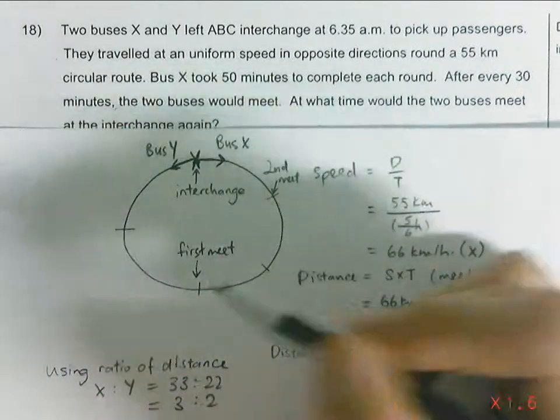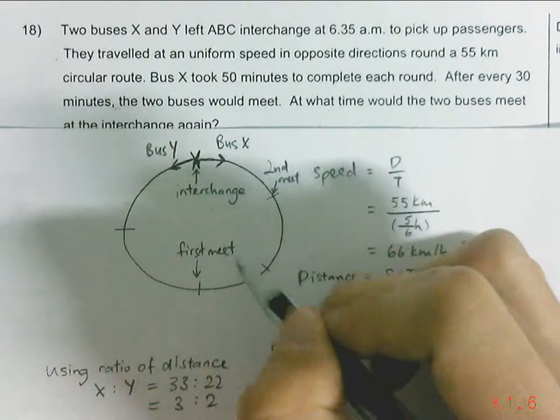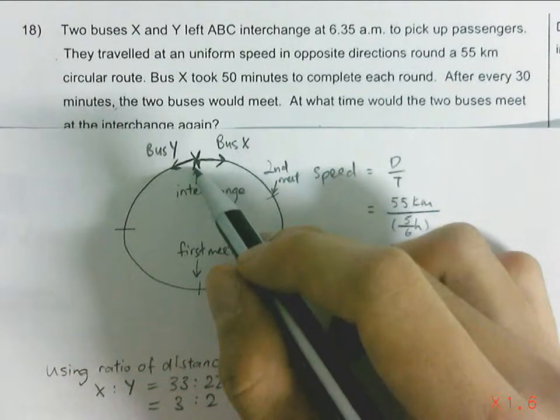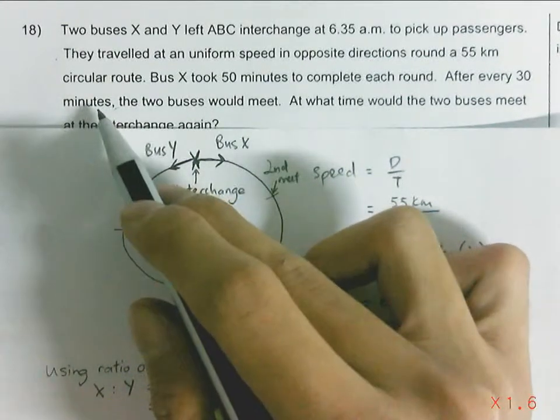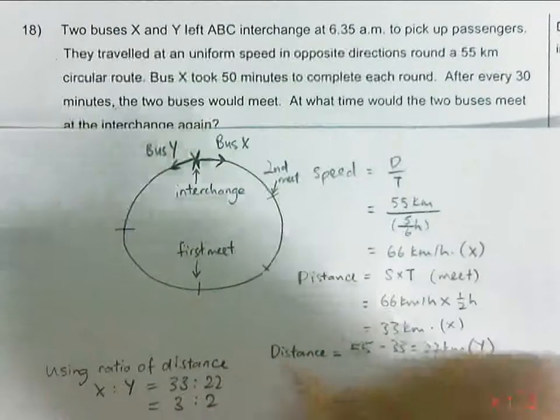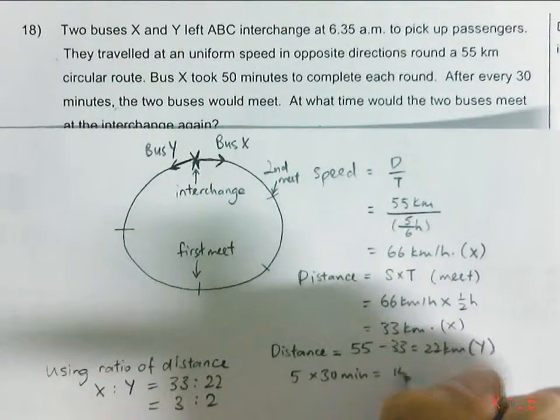So 1st, 2nd, and so the 3rd and 4th, and then finally the 5th time. So 5 times. Every meet would take 30 minutes. So 5 times 30 minutes gives us 150 minutes.